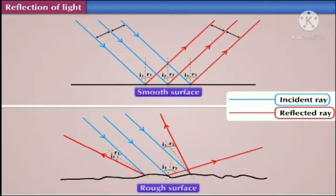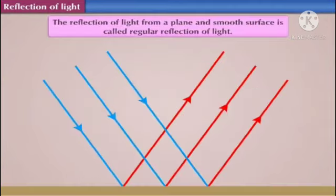In both figures, blue lines indicate the incident rays and red lines indicate the reflected rays. As you can see in the diagram, the reflection of light from a plane and smooth surface is called regular reflection of light.